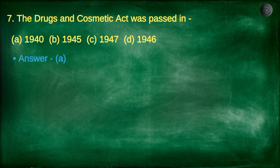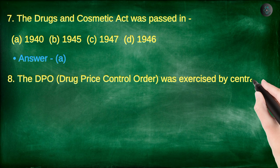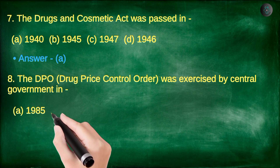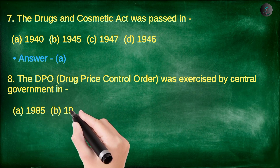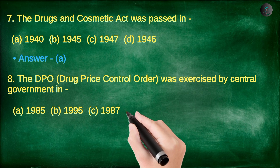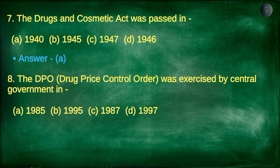Next question. The DPO was exercised by the central government in: A. 1985, B. 1995, C. 1987, D. 1997.